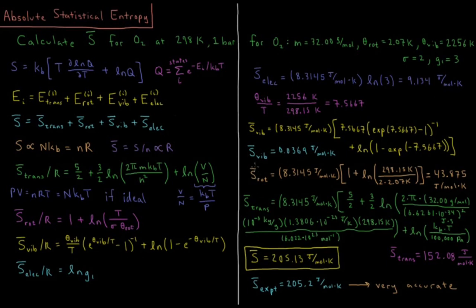Then for the rotational molar entropy, 8.3145 joules per mole Kelvin times 1 plus the natural log of 298.15 Kelvin over 2, the symmetry number, times the rotational temperature 2.07 Kelvin. That gives me a final value of 43.875 joules per mole Kelvin. Notice it's much, much more than the vibrational entropy, it's bigger than the electronic entropy. The biggest contribution is going to be from translations, but rotations does have a very significant contribution as well. So notice that it's got a 1 out there, the translations has a 5 halves, and then there's whatever contribution comes from the rest of the stuff, whereas all of these are things that are generally pretty close to zero.